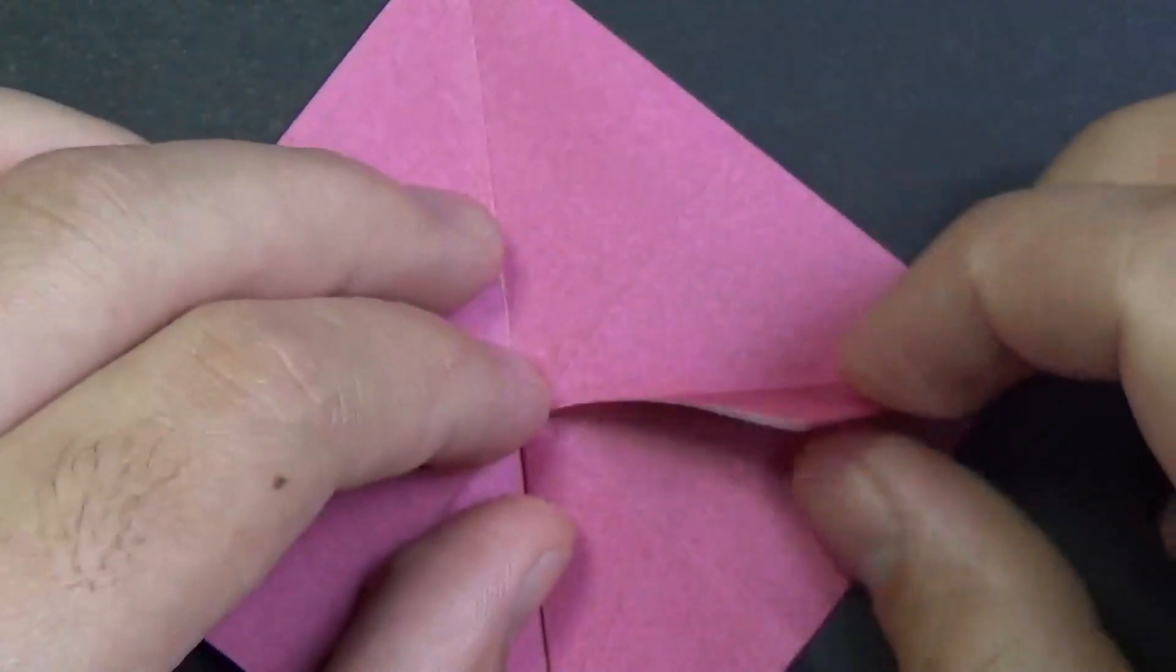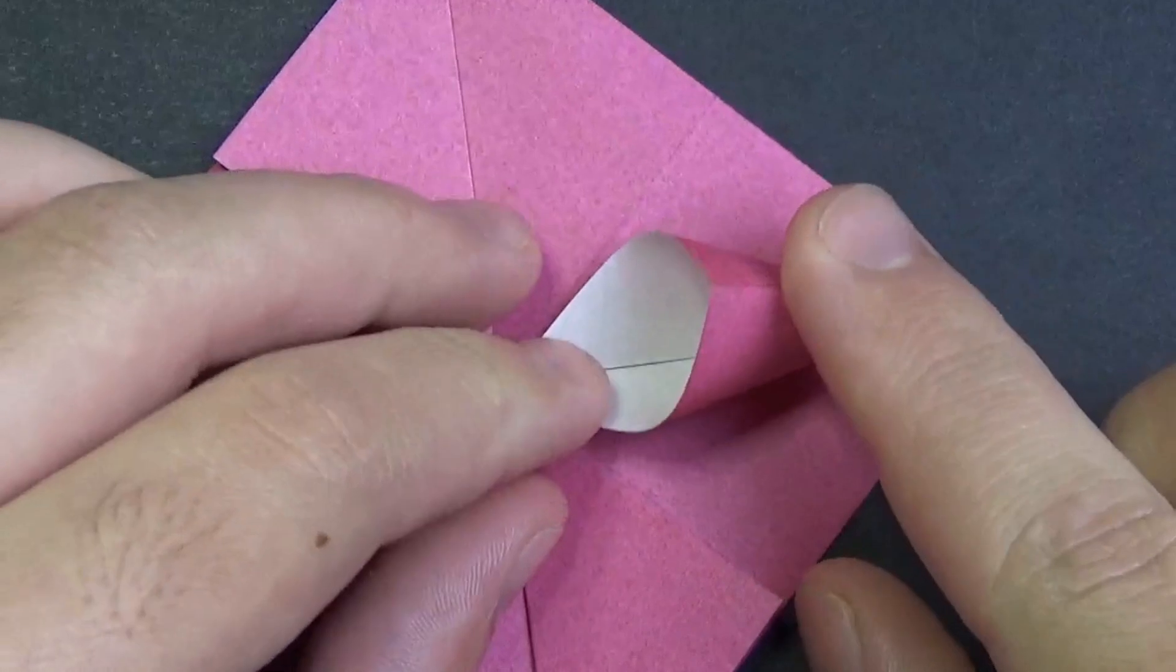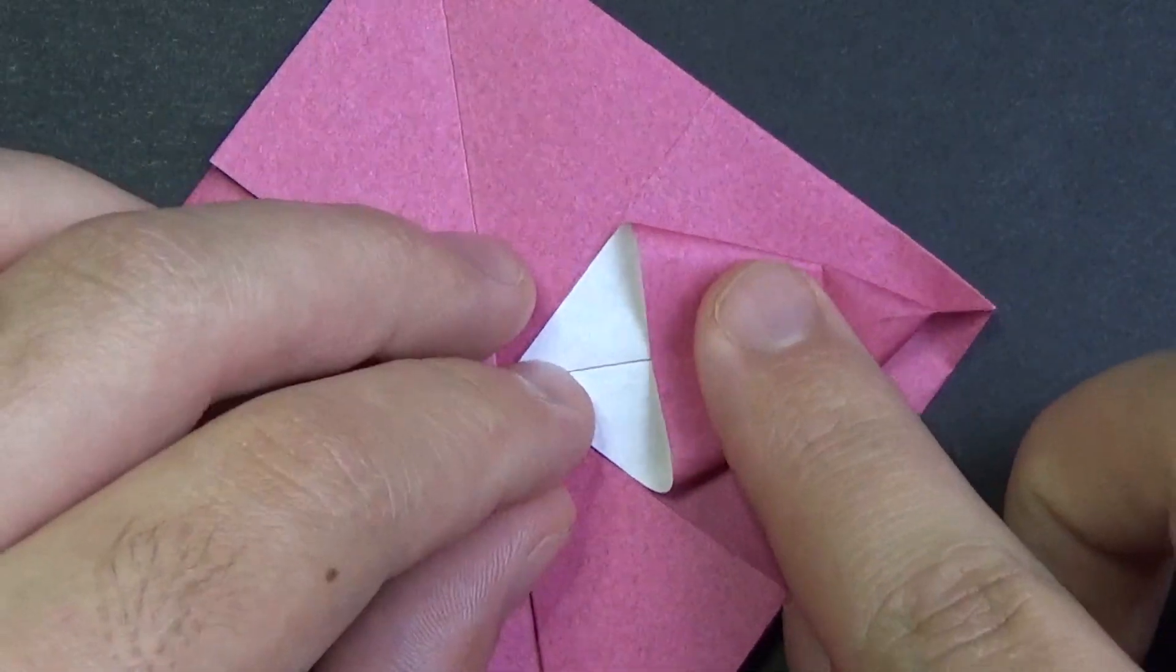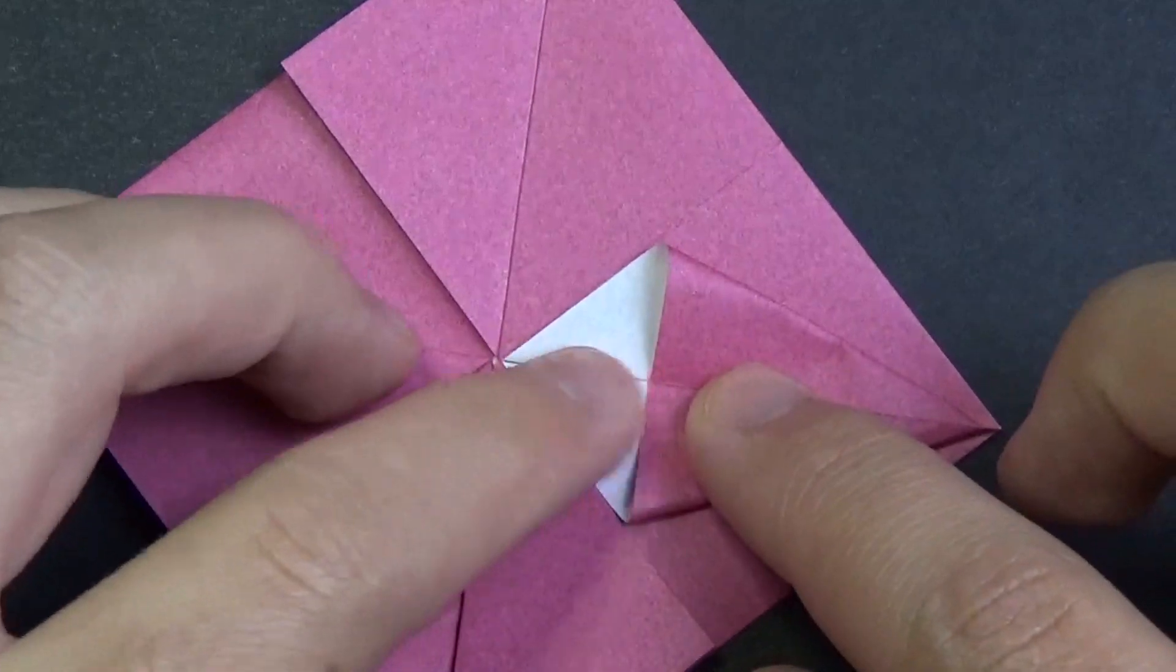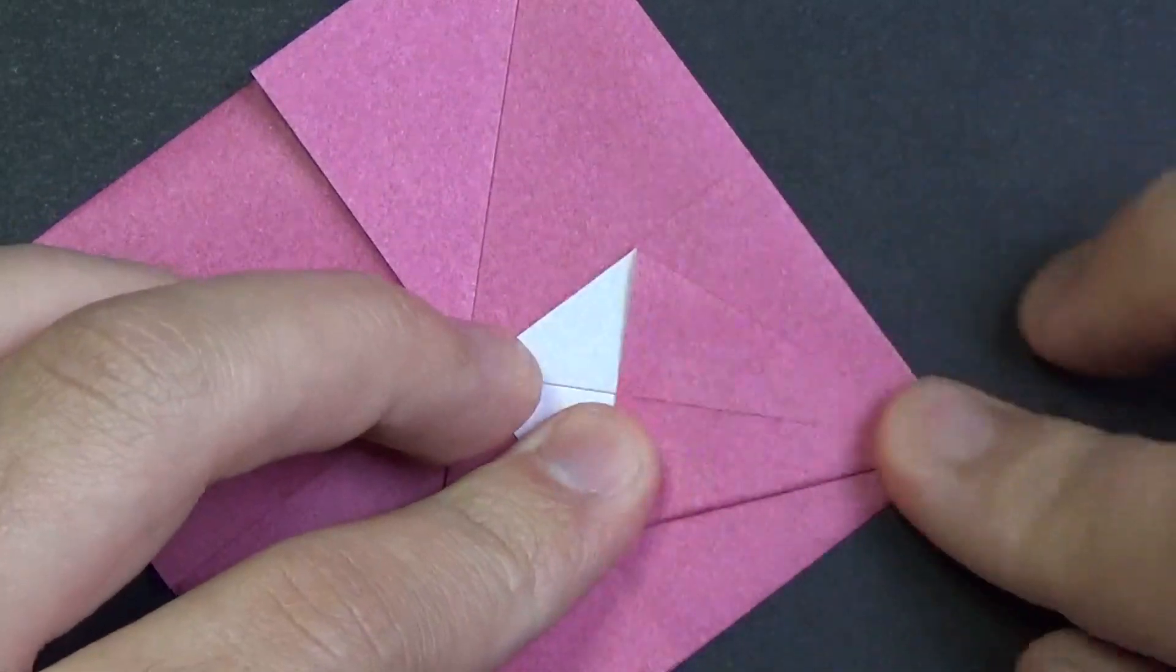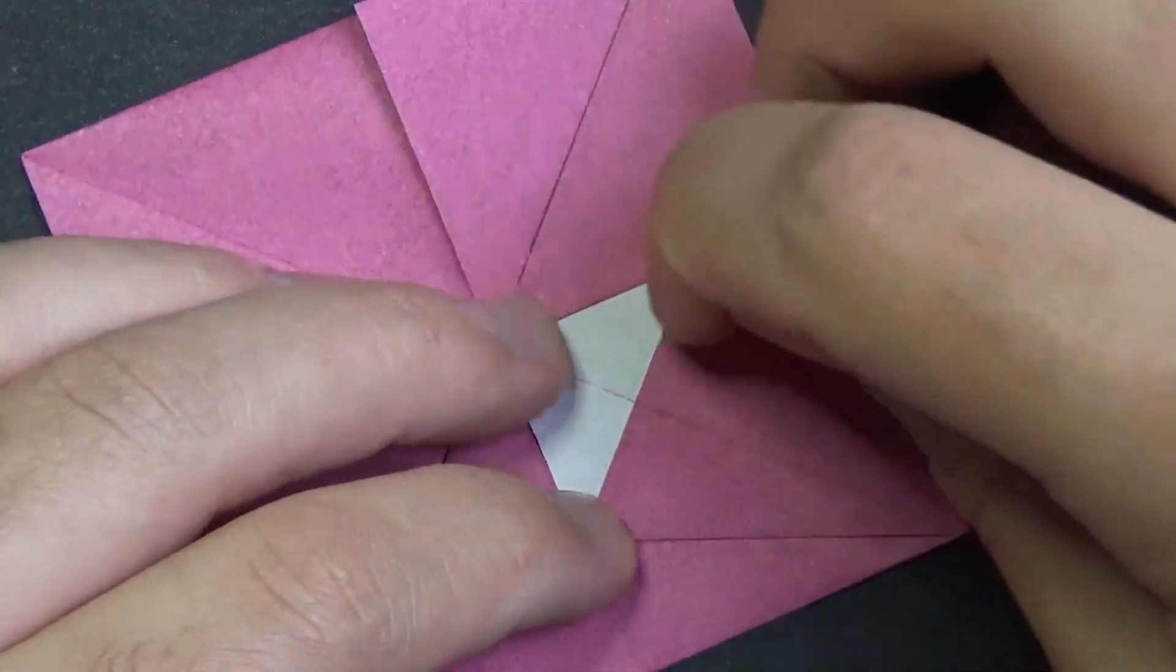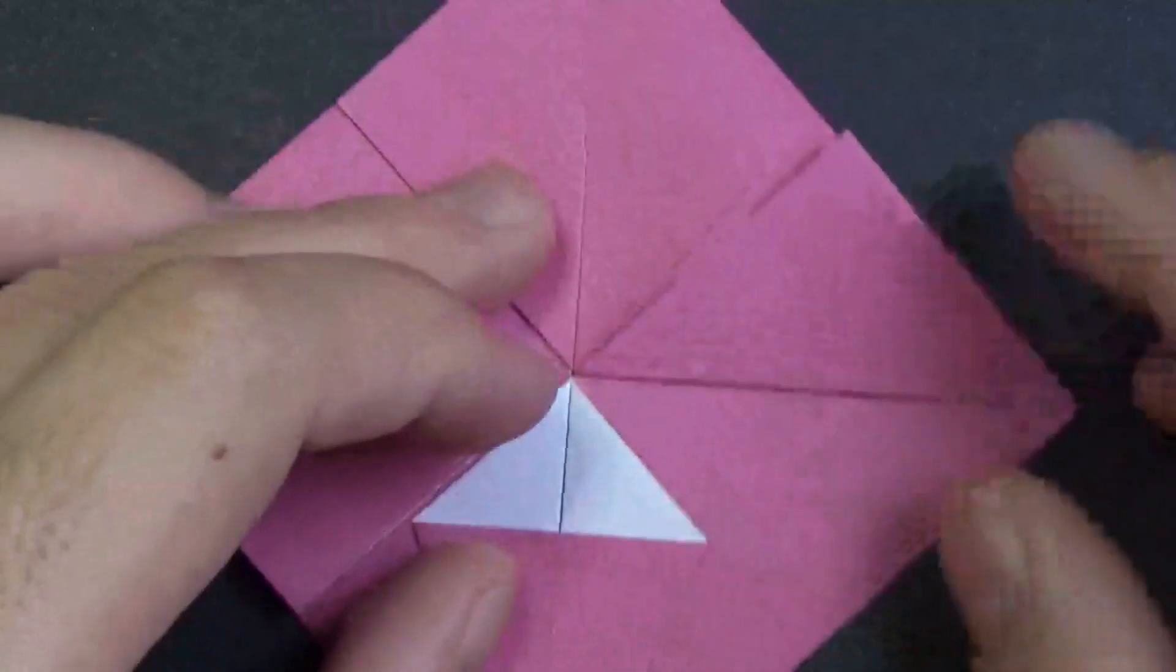Okay, and now what we're going to do is, we're going to open here, like this. Open that pocket, and we're going to squash, just like this. And make sure the crease aligns with this line. So this, that's what it looks like. And do that three more times.